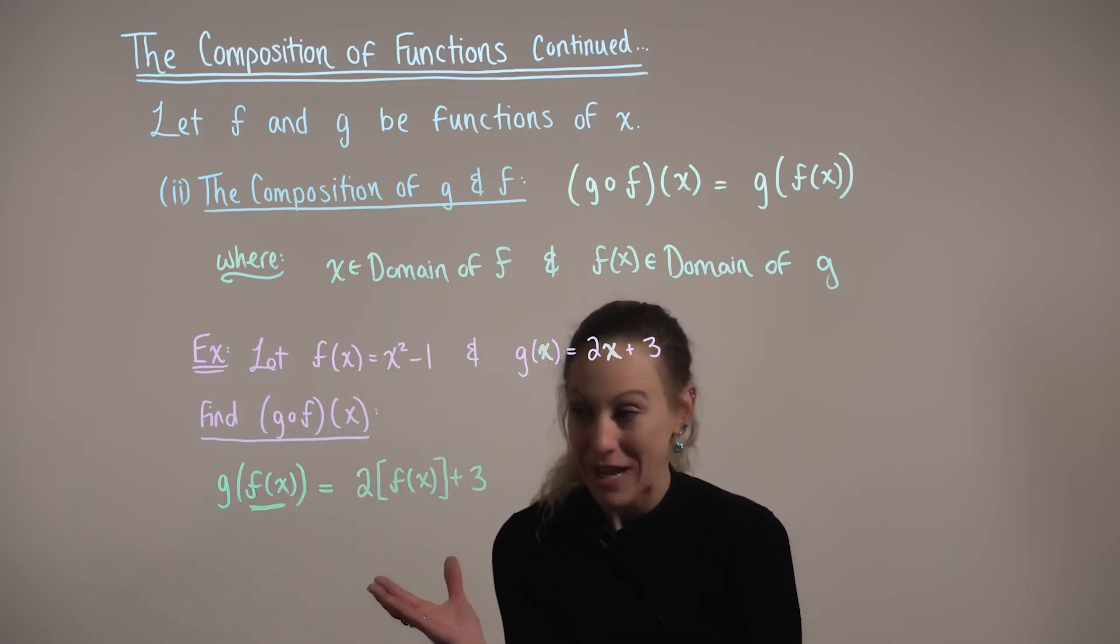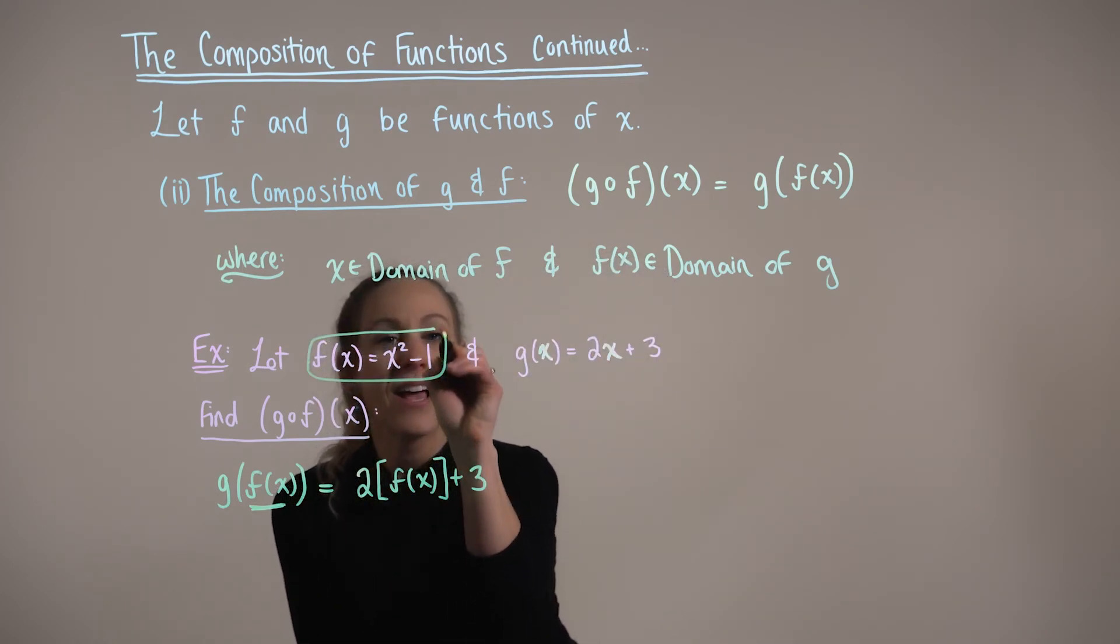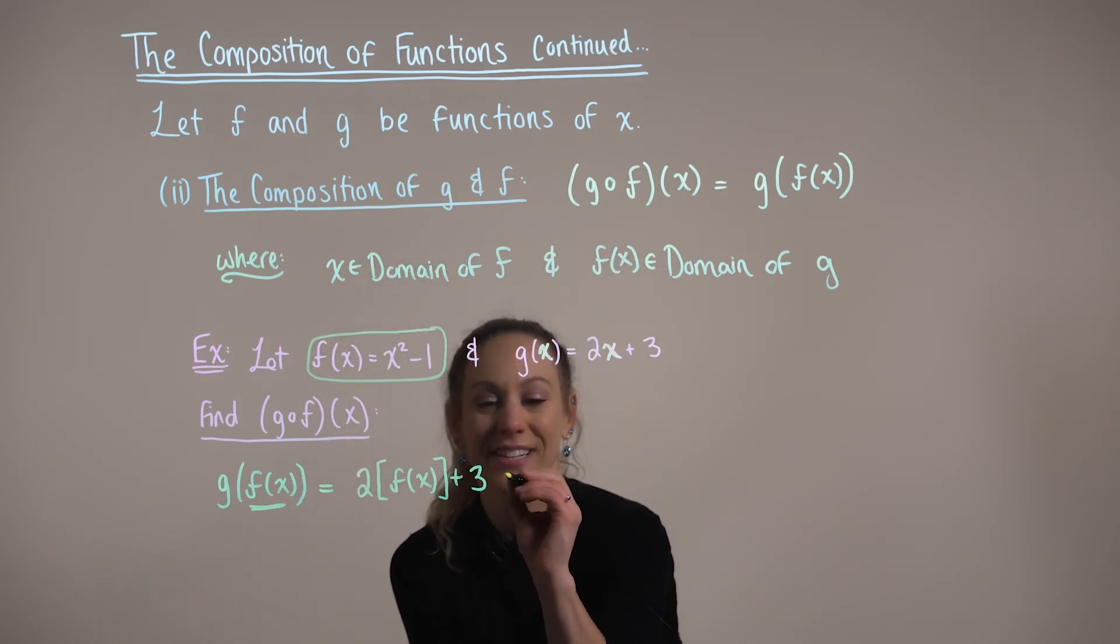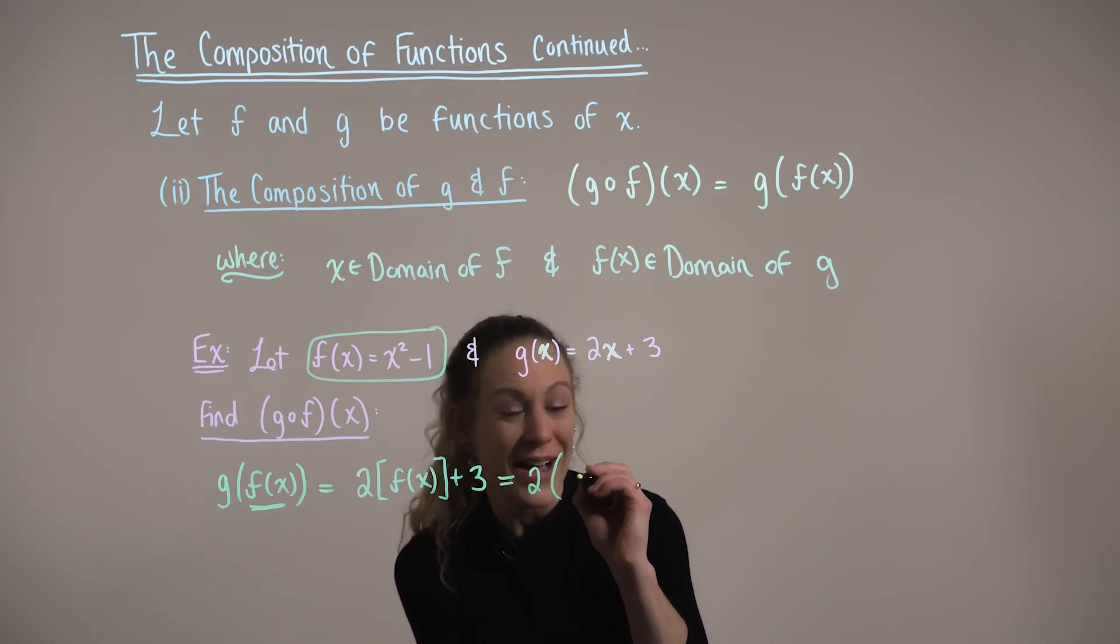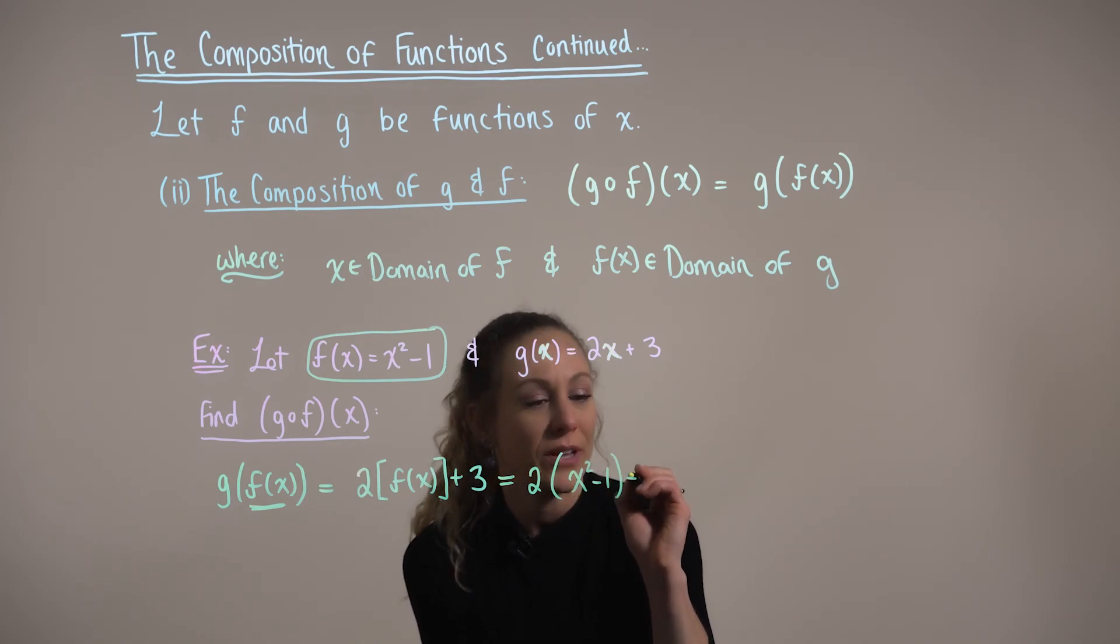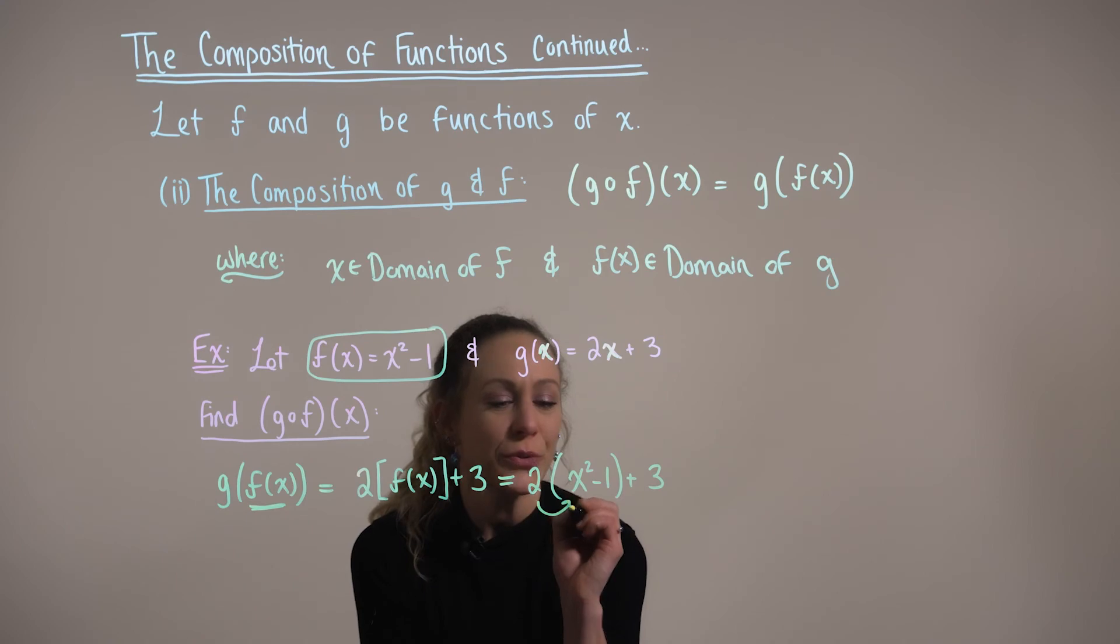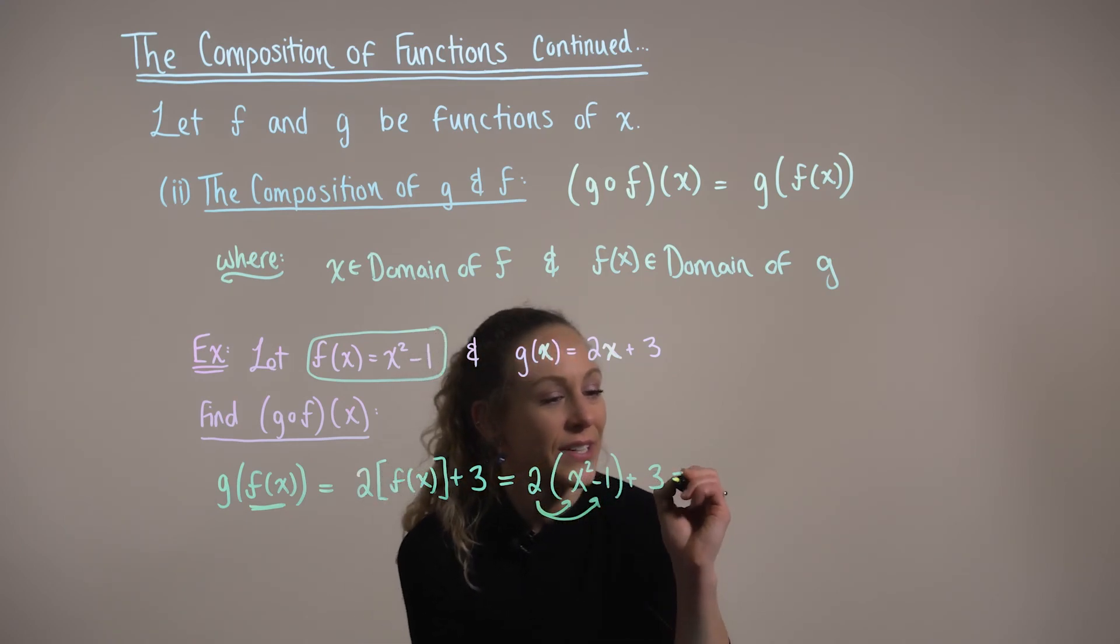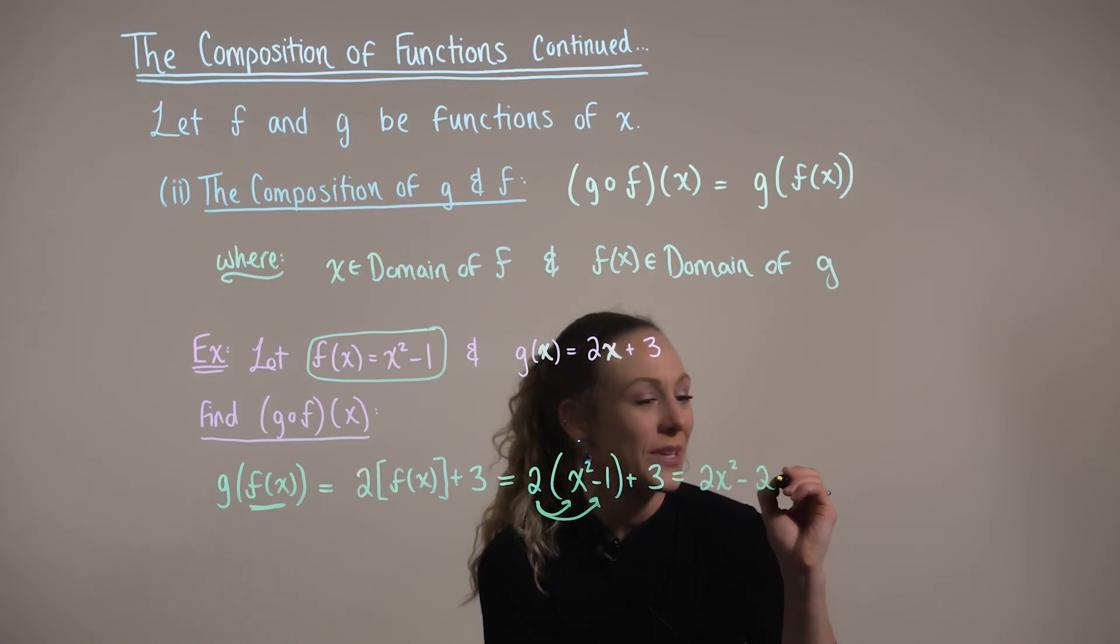So now that we've applied the composition, let's go ahead and substitute f of x into this. We can rewrite this as 2 multiplied by x squared minus 1 plus 3. And to simplify, we'll distribute our 2 through, which produces 2 times x squared minus 2 plus 3.